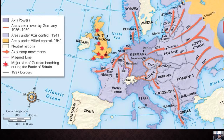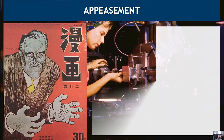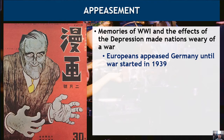This map shows the expansion, and quickly after 1939 it became very apparent that Germany was almost unstoppable. The United States, as well as European countries, had engaged in a policy of appeasement — to please, to give in to a bully in order to get that bully to leave you alone. Out of memories of World War I and the effects of the Depression, countries grew weary of conflict. Europeans appeased Germany until war started in 1939, giving in to Hitler's demands, expansion, and militarization.